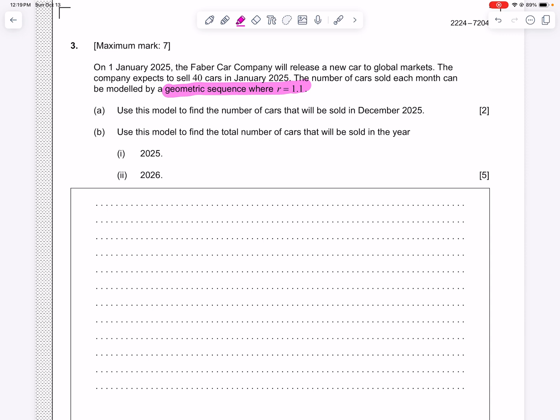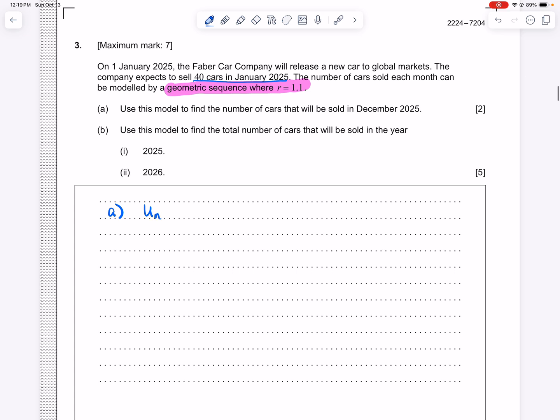First, you have to know, of course, the number of cars sold in the beginning. And so we see here that in January, there were 40 cars sold. So from January to December, there are 12 months. So there are 12 terms. So in order to answer A, we're going to use from our formula sheet, the formula UN equals U1 times R to the N minus 1.